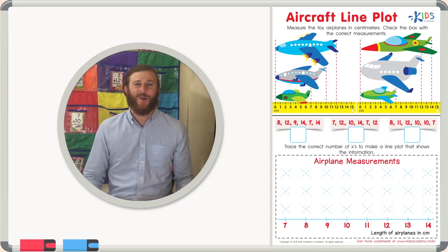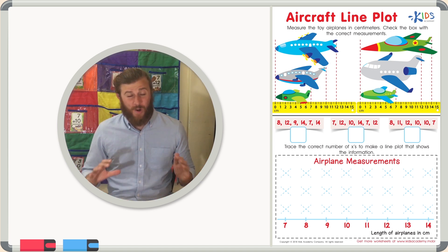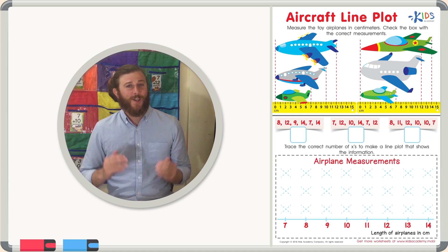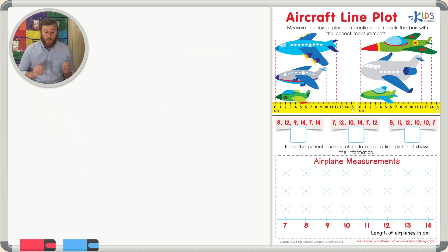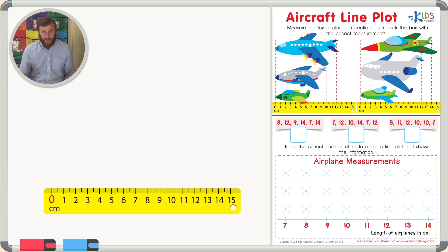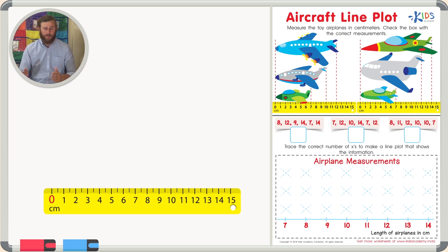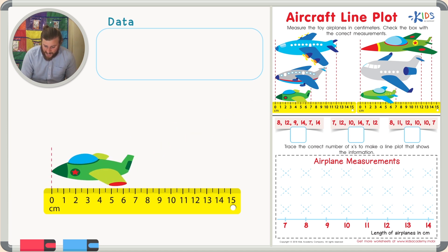Hello boys and girls, it's teacher Michael. Today I'd like to help you make your very own line plots. We're going to measure some toy airplanes using a ruler. We'll start at the zero mark on the centimeter ruler and follow each airplane to the end to see how long it is. Our first green airplane starts at zero and ends at seven — it's seven centimeters long.